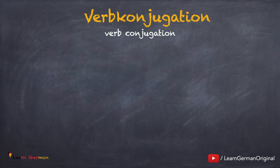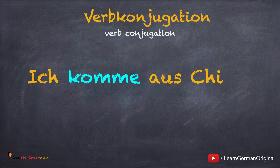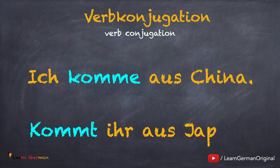Here are two examples of verb conjugation: 'ich komme aus China' and 'kommt ihr aus Japan?' As you can see, both sentences have the same verb but it is conjugated differently.